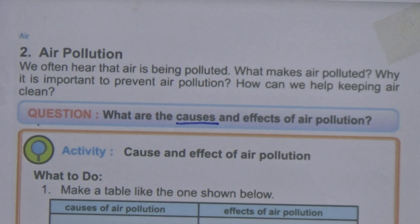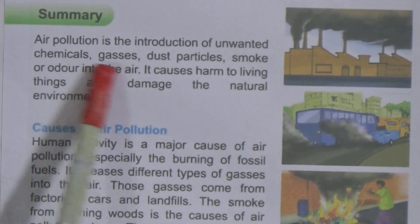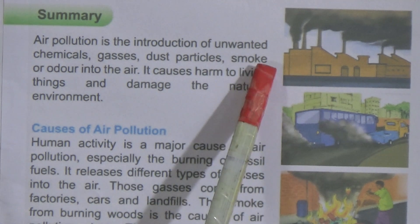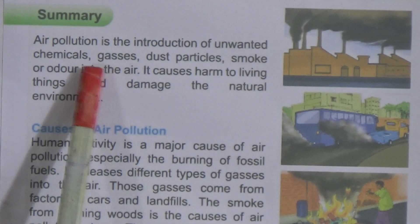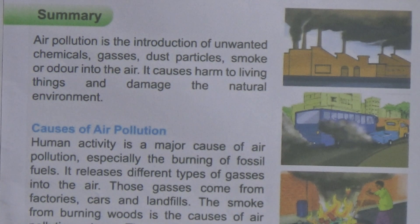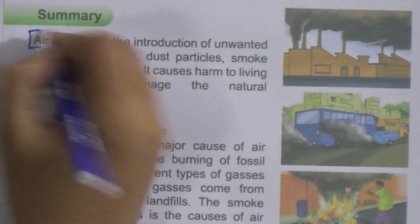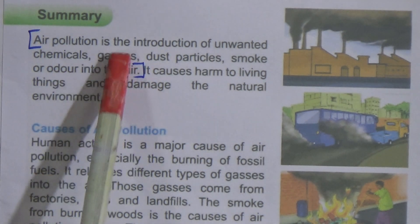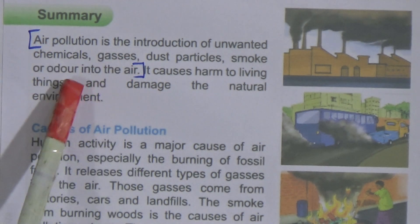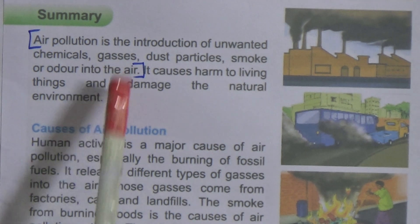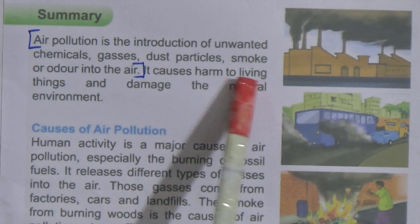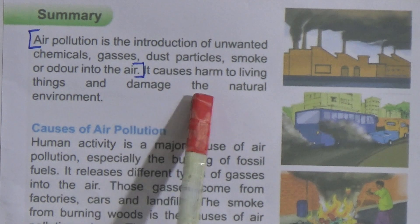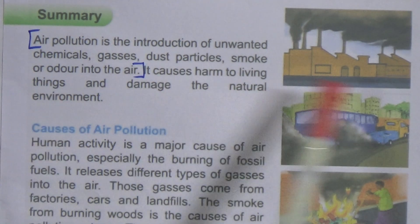Air pollution is the introduction of unwanted chemicals, gases, dust particles, smoke, or water into the air. This is the definition of air pollution — you have to memorize it. We also discussed air pollution in chapter 2. It causes harm to living things and damages the natural environment.